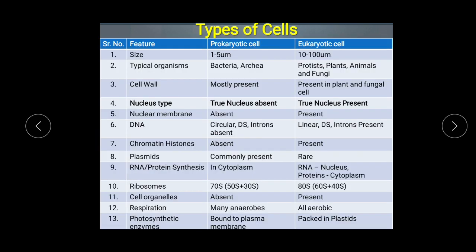In the last presentation we discussed the comparison chart showing the differences between prokaryotic and eukaryotic cells. The cell wall is mostly present in prokaryotic cells, while in eukaryotic cells it is present only in plant and fungal cells. The true nucleus is absent in prokaryotic cells but present in eukaryotic cells, and the nuclear membrane is absent in prokaryotic cells — that is why eukaryotes are said to have a true nucleus.